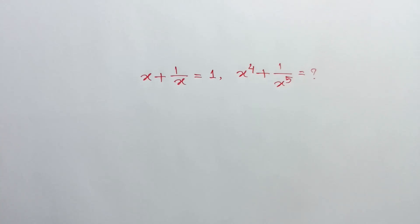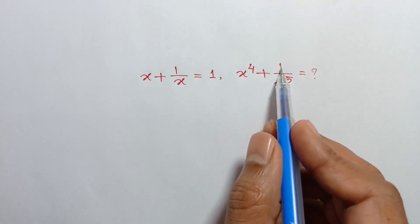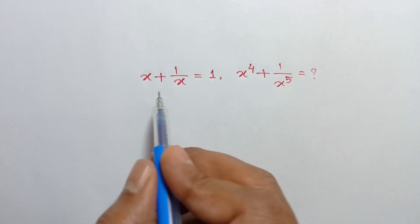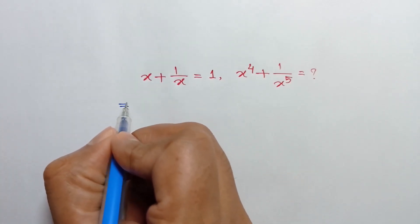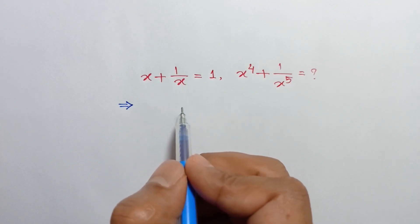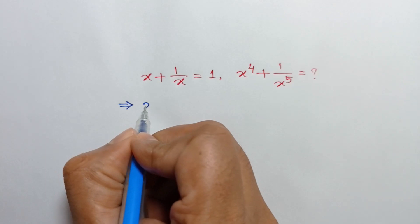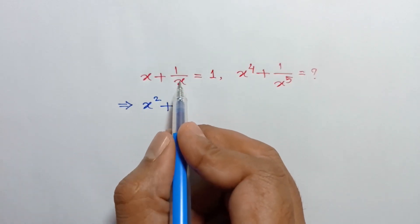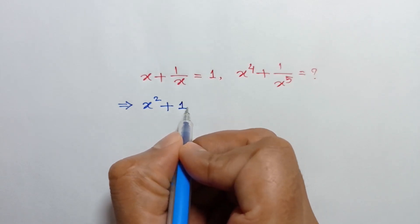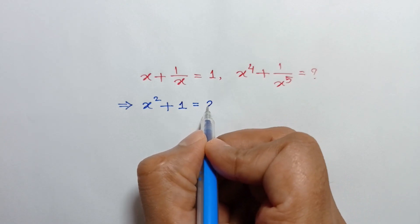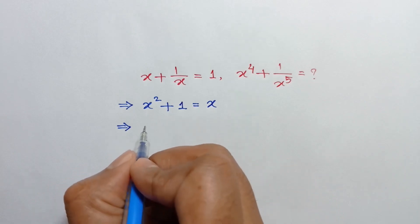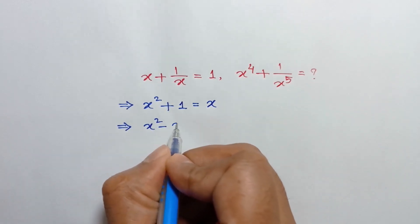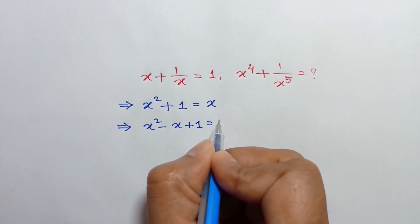Hi everyone. In this video I am going to show how to find the value of x to the power 4 plus 1 over x to the power 5, where x plus 1 over x is equal to 1. If we multiply both sides by x, we can write x squared plus 1 is equal to x, or taking x to the left side we can write x squared minus x plus 1 is equal to 0.